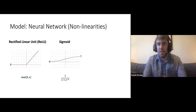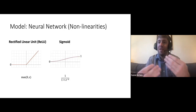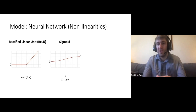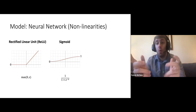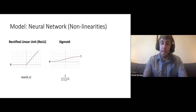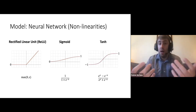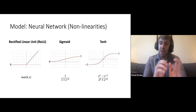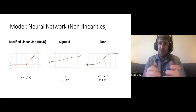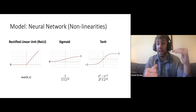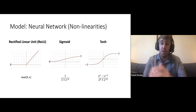Another common nonlinearity is the sigmoid, which we've already seen — it takes the weighted sum coming into a hidden unit and squashes it to be between zero and one. The third nonlinearity is the hyperbolic tangent, or tanh, which takes our input and squashes it to be between negative one and one.